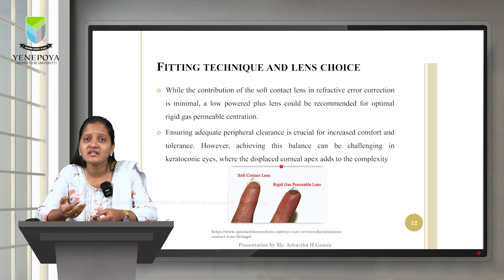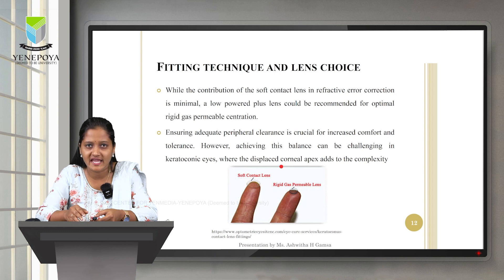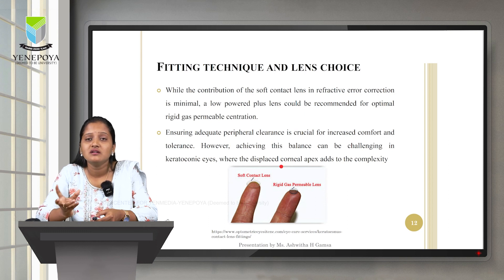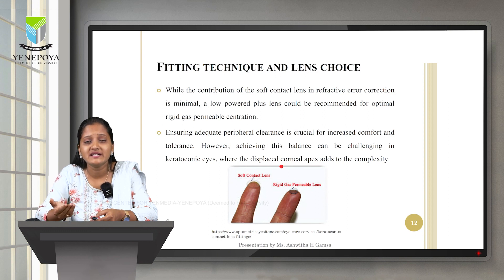The main objective of the piggyback system is better fit and better visual acuity. Most of the corrective power is provided by the RGP, not the soft lens. The overall power can be calculated through over-refraction. Ensuring adequate peripheral clearance is crucial for comfort and tolerance; however, this can be challenging in keratoconic eyes where the displaced corneal apex adds complexity to the fitting.